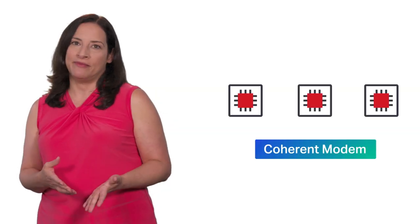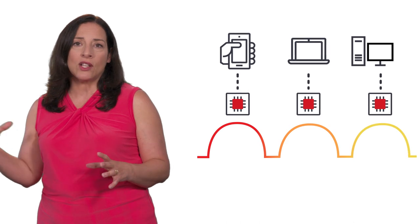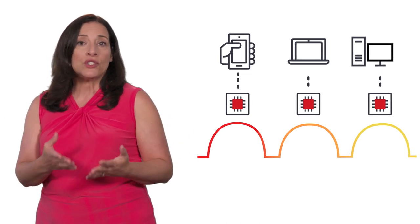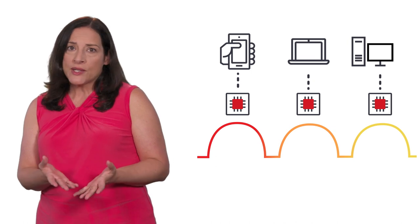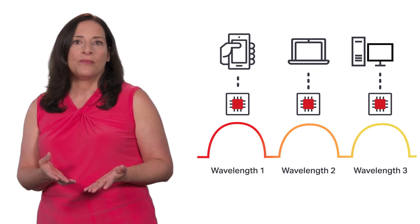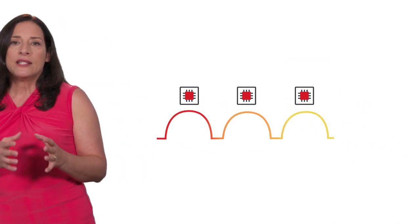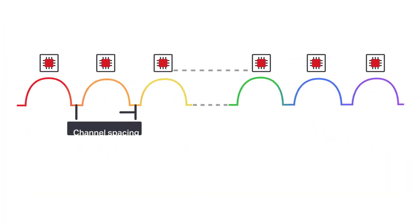So now, let's look at a Coherent Modem. This is the subsystem that takes in the client traffic and converts it into an optical signal using a certain modulation technique, and this optical signal is what we call a wavelength. Each wavelength carries a certain throughput, for example, 100 gigabits per second, takes up a certain amount of spectrum, and requires a certain amount of channel spacing on a fiber.